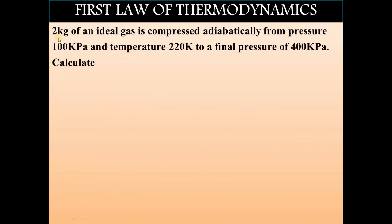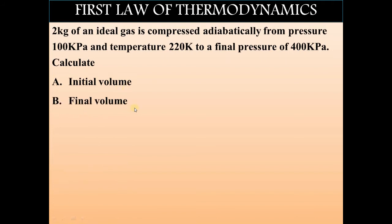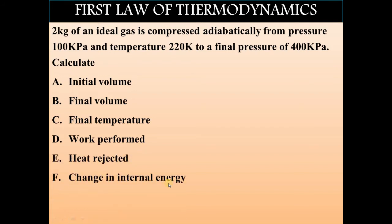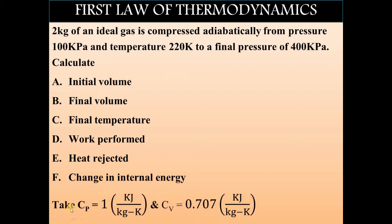2 kg of an ideal gas is compressed adiabatically from pressure 100 kPa and temperature 220 K to a final pressure of 400 kPa. Calculate: A. Initial Volume, B. Final Volume, C. Final Temperature, D. Work Performed, E. Heat Rejected, F. Change in Internal Energy. Take Cp = 1 kJ/kg·K and Cv = 0.707 kJ/kg·K.